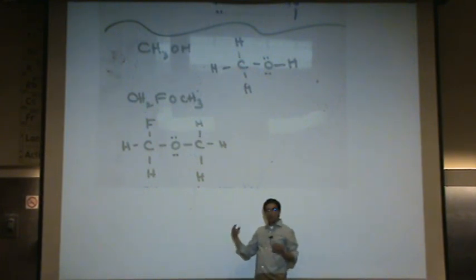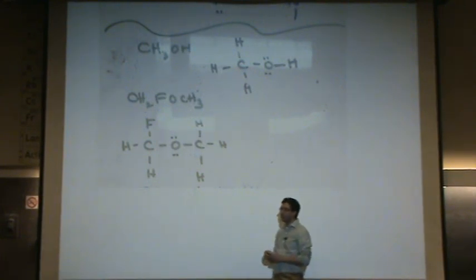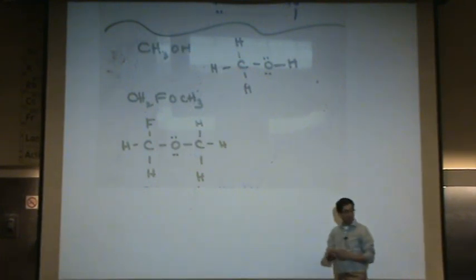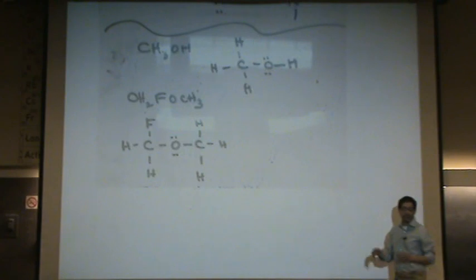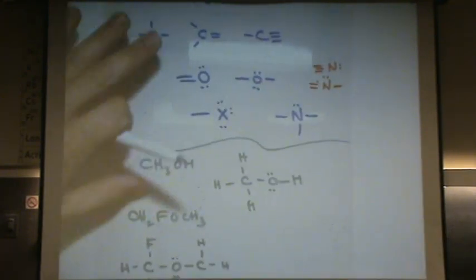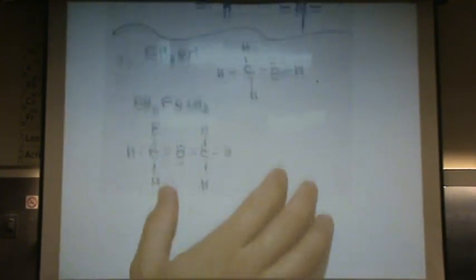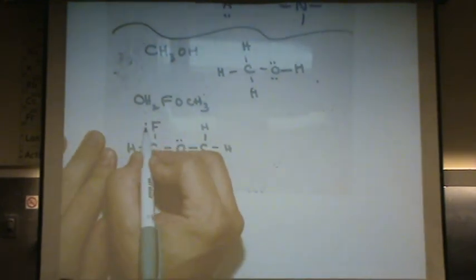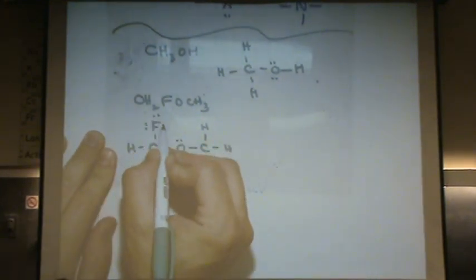I know this goes a little fast — it's different than how you did it before with counting the electrons. But as you get used to the procedure of these templates, you'll get faster and faster. Fluorine will have those three lone pairs around it.